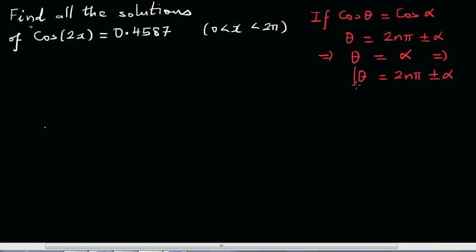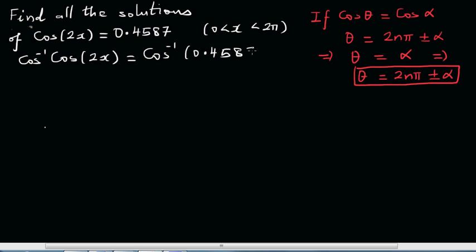This is what we want to write in this form. From this form, if I want to cancel the cos, I can do cos inverse of cos(2x) equals cos inverse of 0.4587. Cos inverse and cos cancel each other out, so 2x equals cos inverse of this.